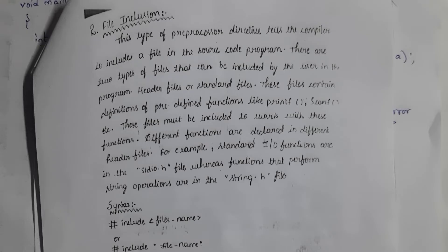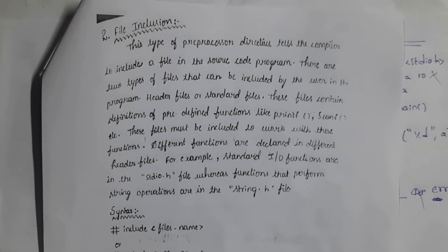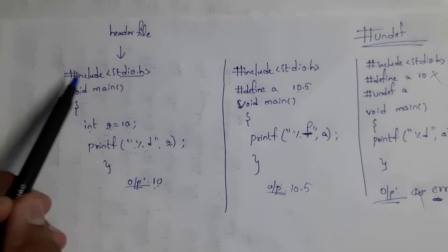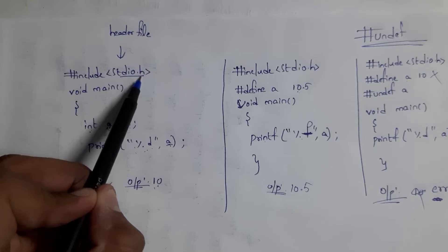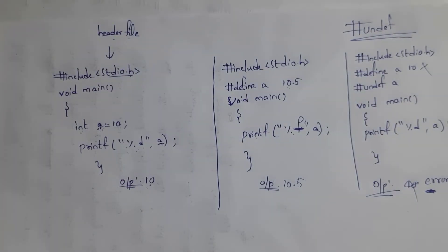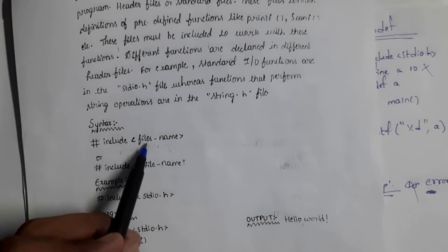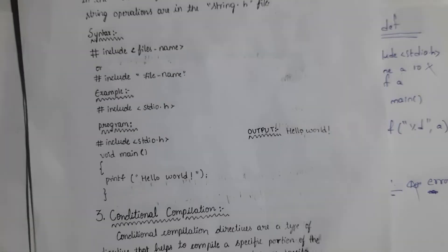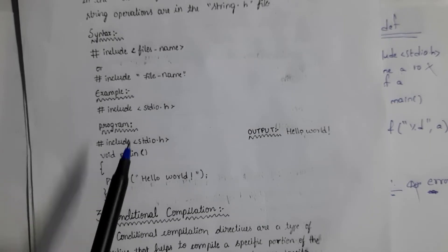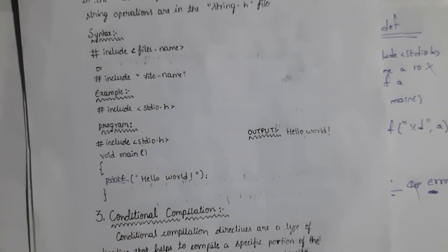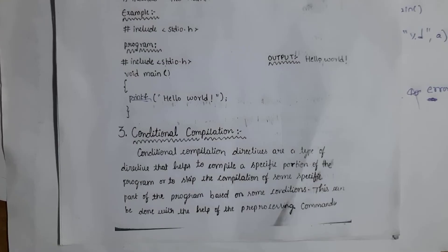The next type is file inclusion directive. If you want to include any files in your program, you use the file inclusion directive. For example, #include stdio.h includes the stdio.h header file. The syntax is: #include <filename> using angle brackets, or #include "filename" using double quotation marks. We include stdio.h because the definition of printf is present in stdio.h.